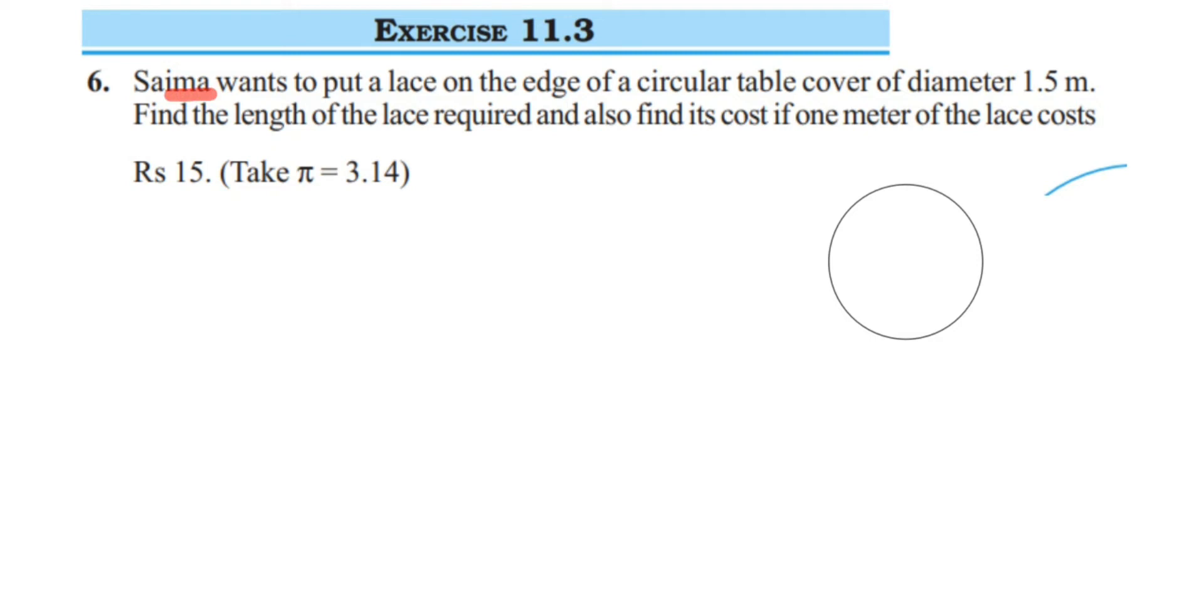So what is given and what they are asking in the question? They have given that Saima wants to put a lace on the edge of a circular table. Assume that this is a circular table, and she wants to put a lace here on the edge, that is, on the circumference of the circular table. And they have given the diameter - the diameter of the circular table is 1.5 meter.